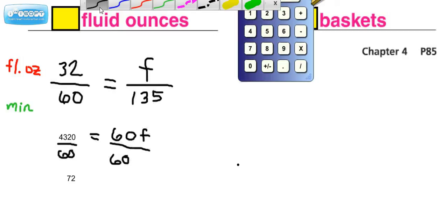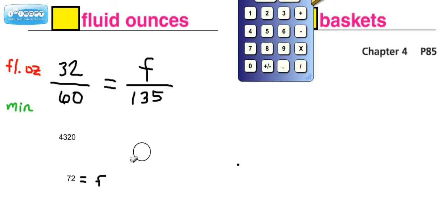Now, you might find it easier to simplify this ratio first, so I want to explore that for a moment. Now, we already know the answer is 72, so we'll leave that there. Let me erase all this stuff here and show you how you might simplify ahead of time.